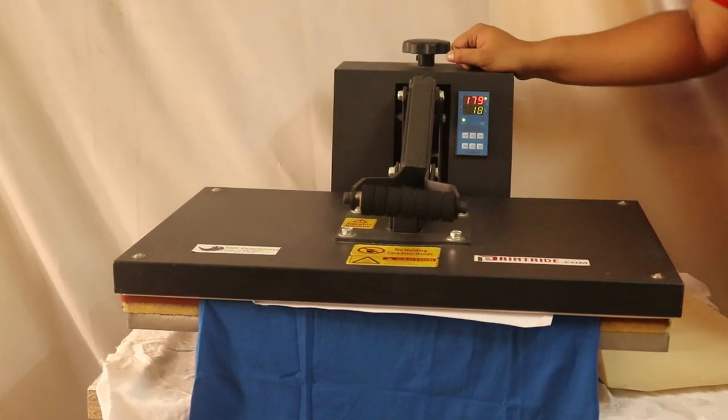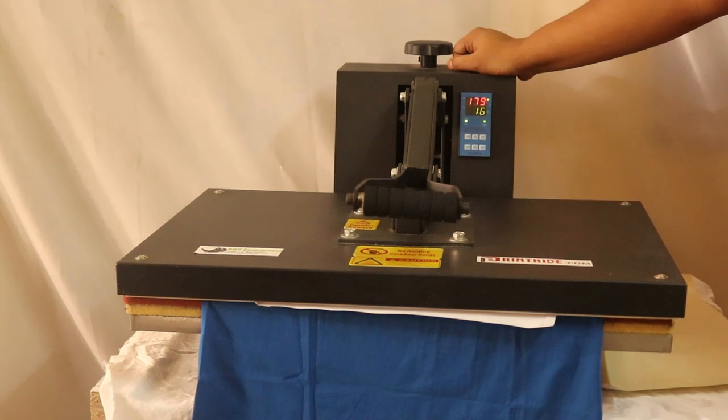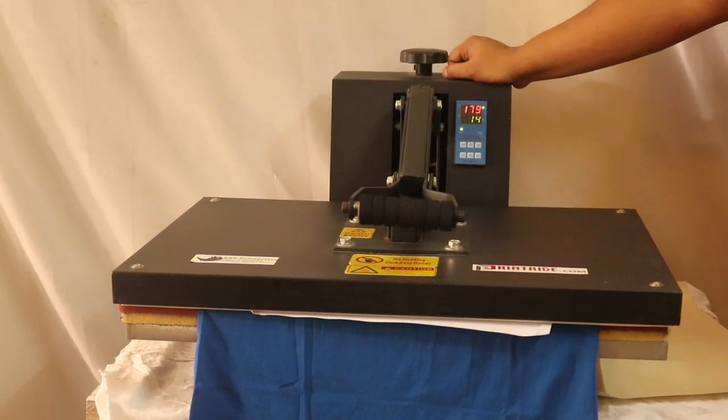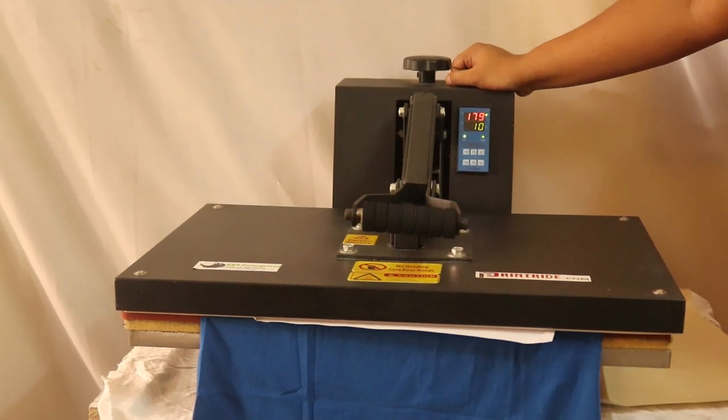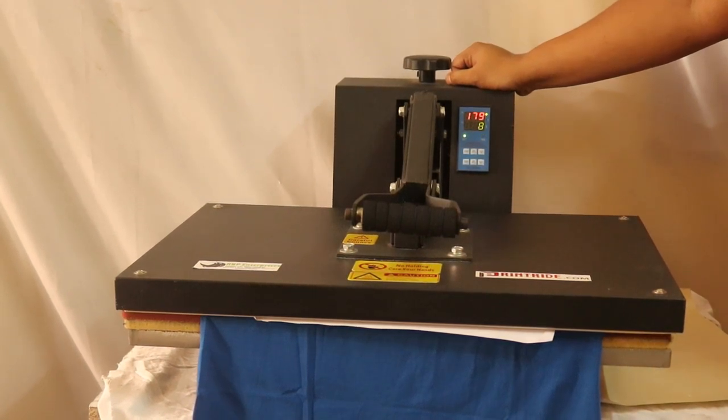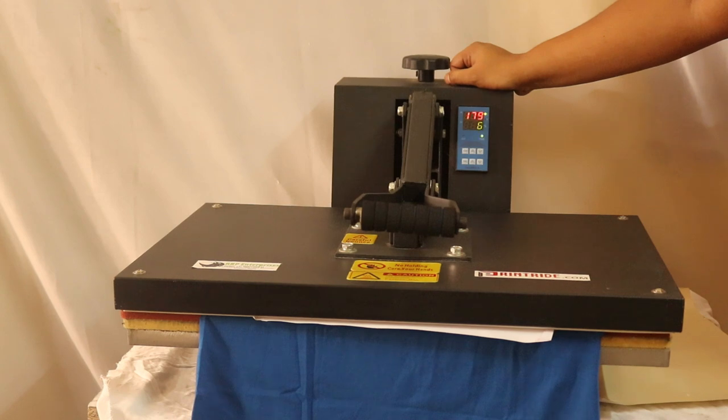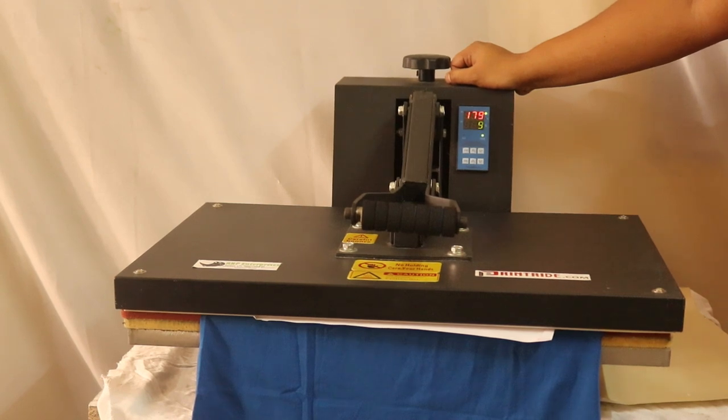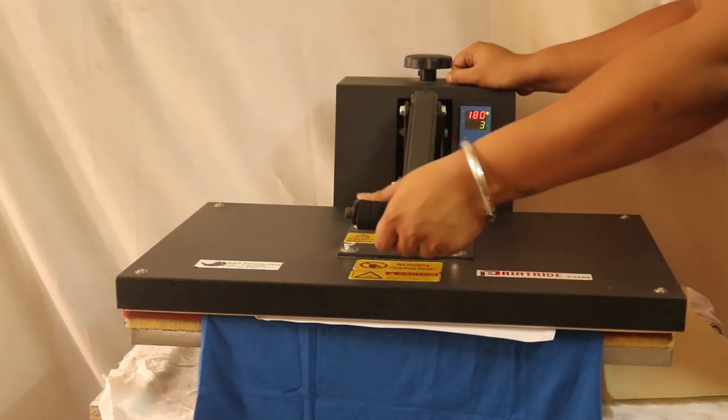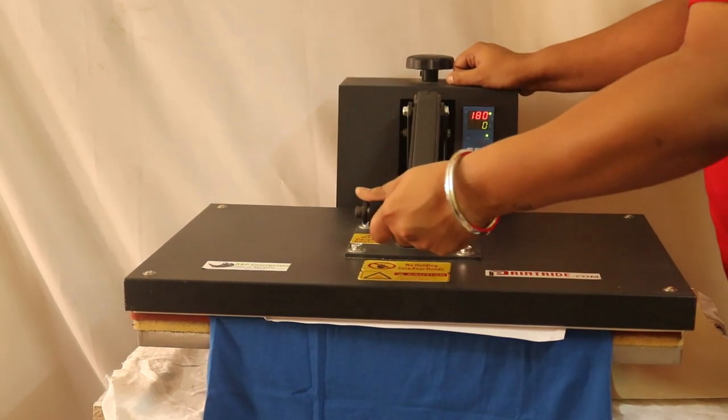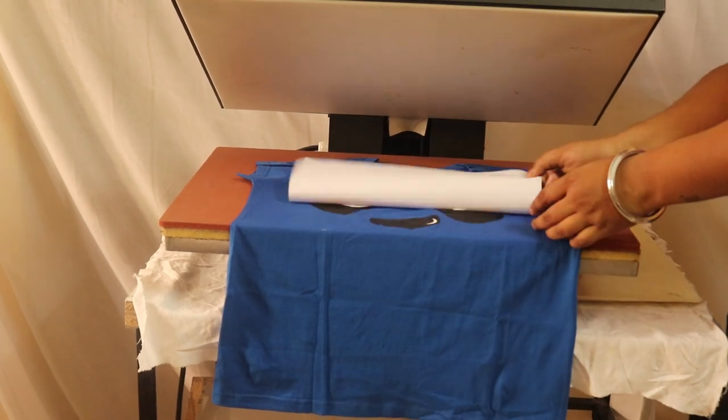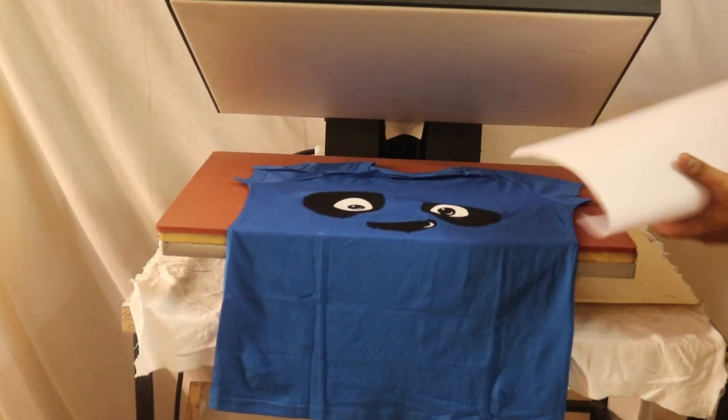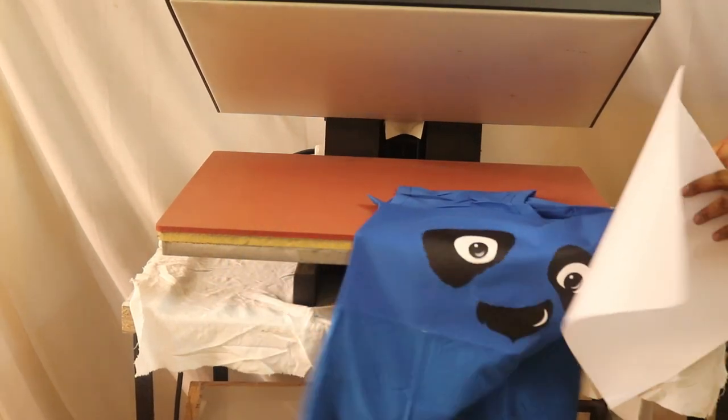Now we have put it for 1 minute, 60 seconds. Now, this one is done. We will open our t-shirt. Now the matte finish is done. You can take out the paper. You can see the sticking and the t-shirt.